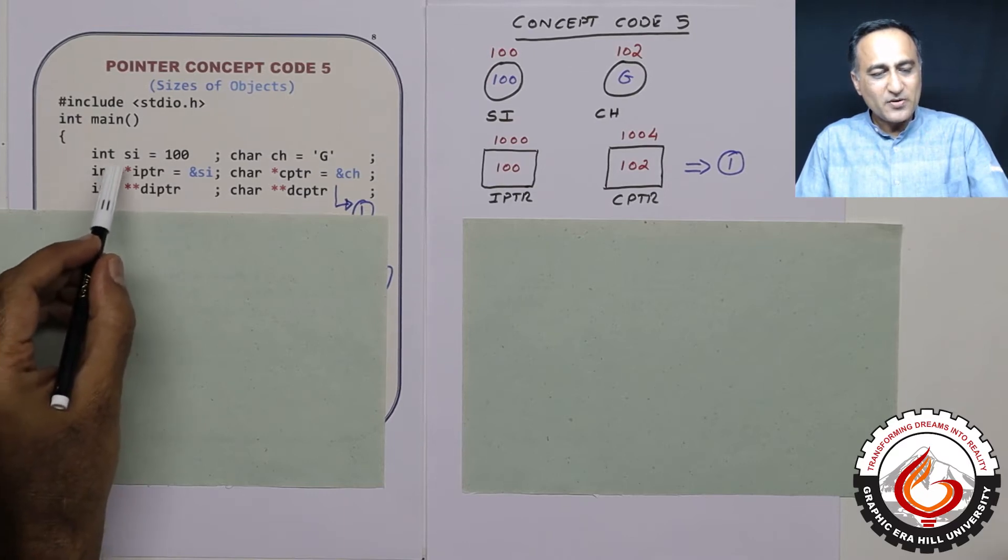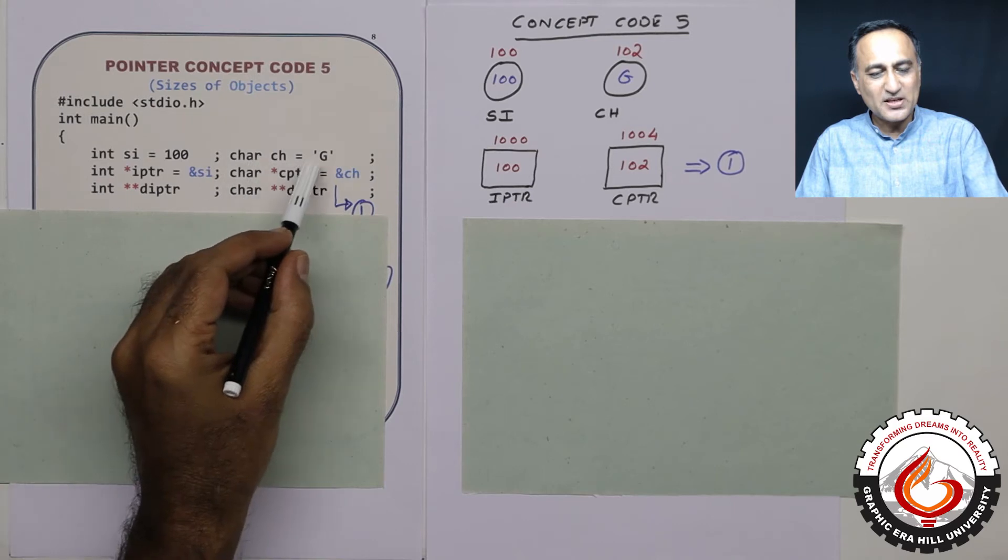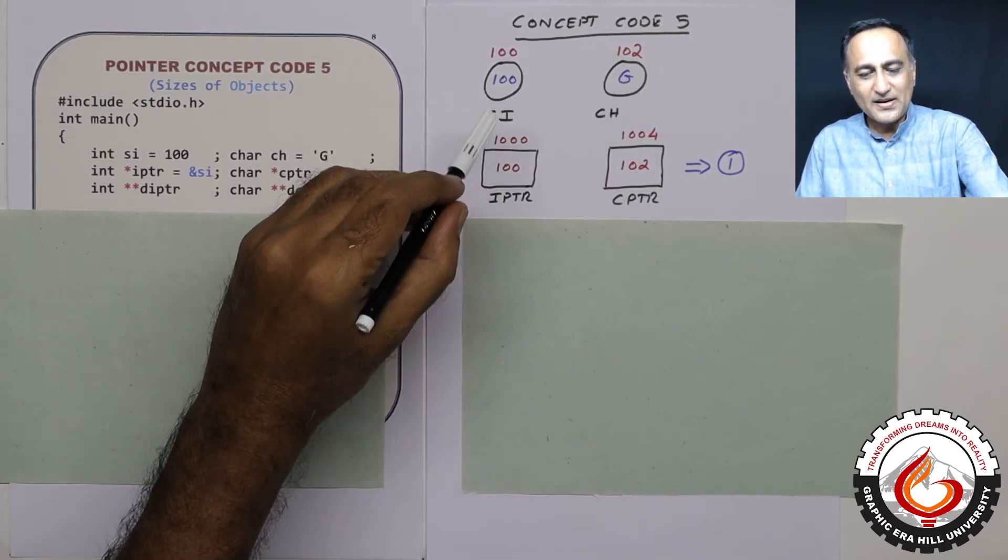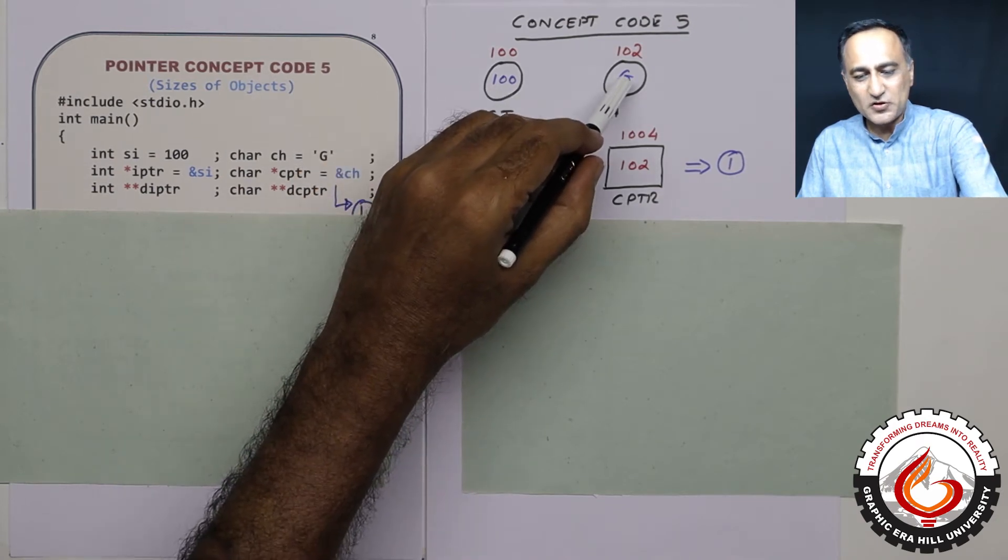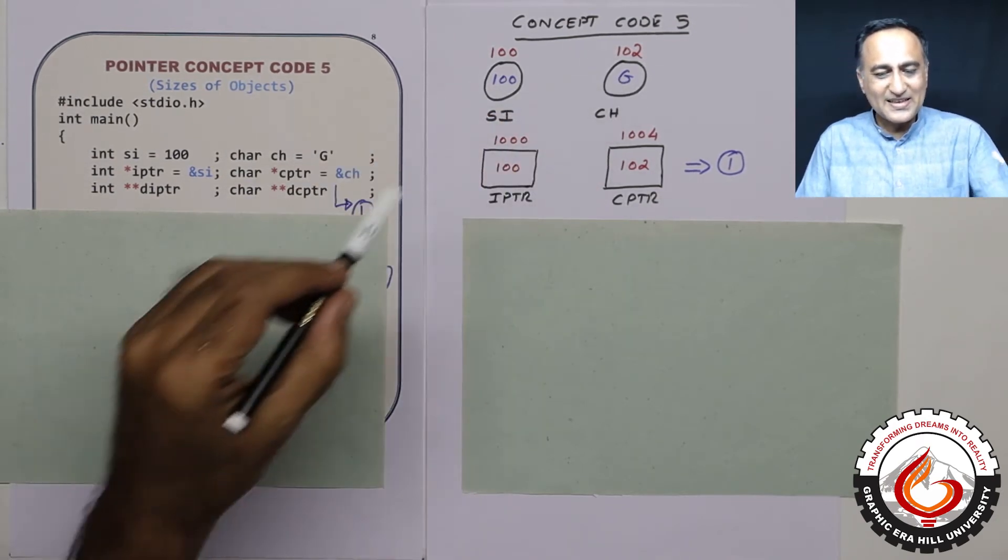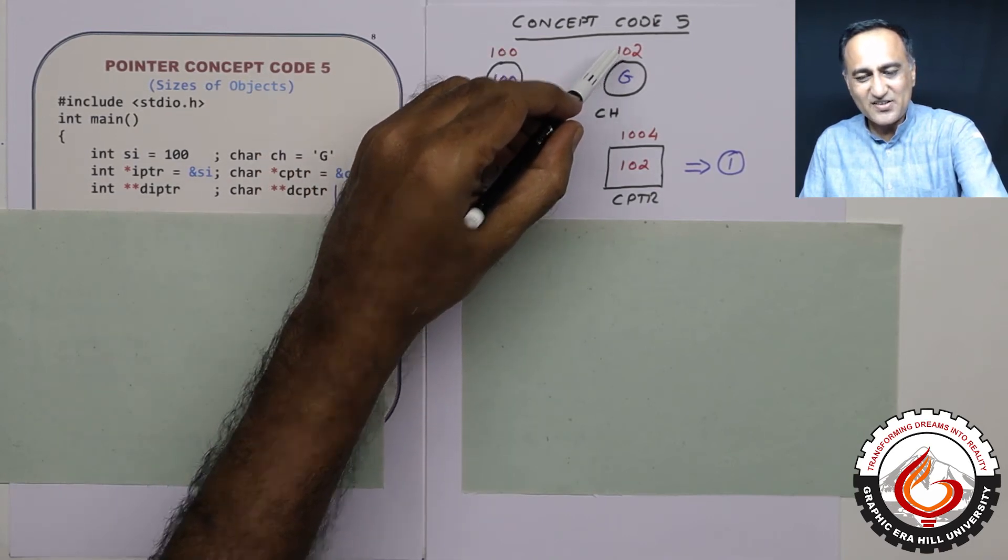I have declared an integer variable si with the value 100. I have declared a character ch with the initial value g. They are represented here. Si has the initial value 100, ch has the initial value g. Now what has happened is si resides at address 100, ch resides at address 102.